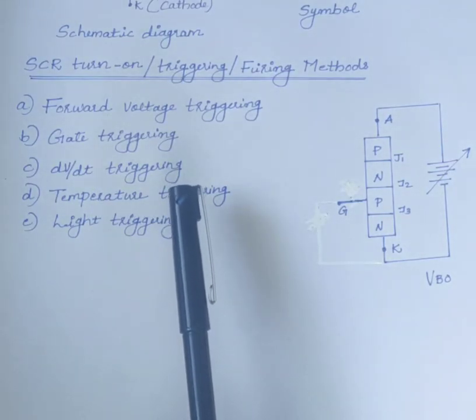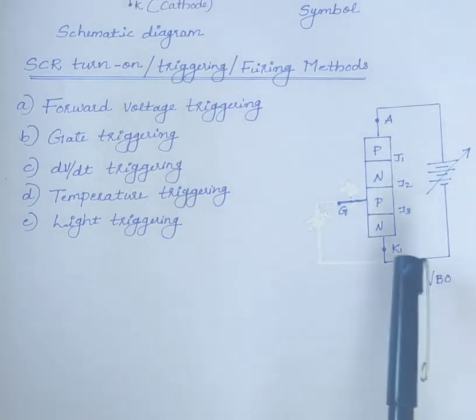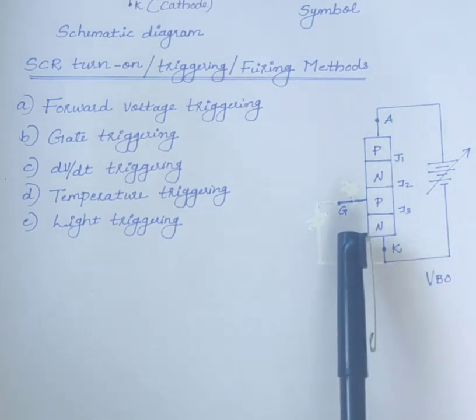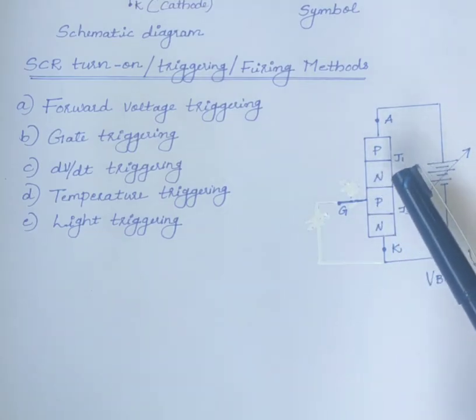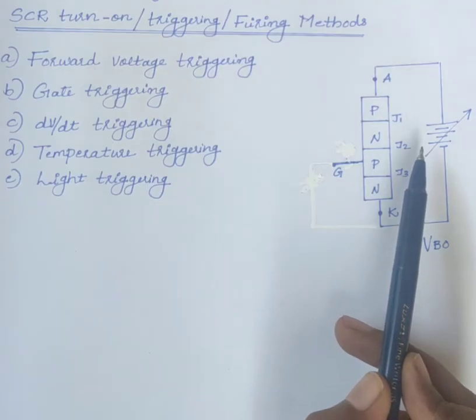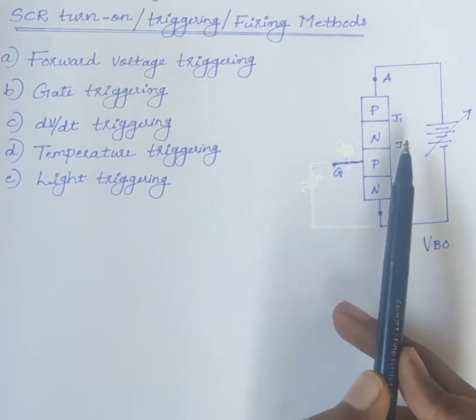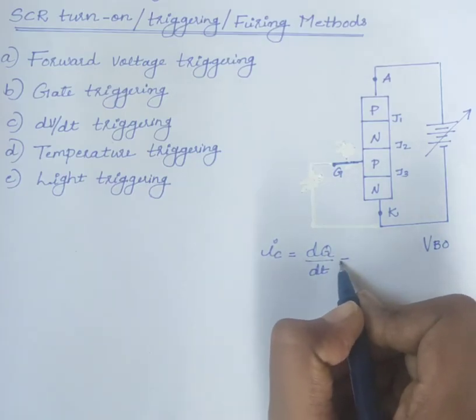Next one is DV by DT triggering. Here also, SCR is forward biased with anode connected to positive and cathode connected to negative of the supply with the gate circuit open. Junction J1 and J3 are forward biased and J2 is reverse biased. This reverse biased junction J2 has a characteristics of a capacitor due to the charges existing across the depletion layer. When a forward voltage is suddenly applied, the charging current through the junction capacitance C is IC equals DQ by DT.